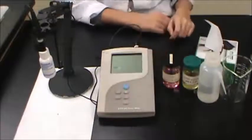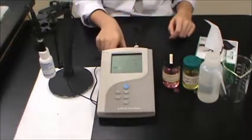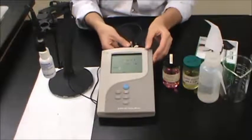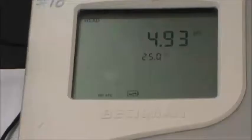Turn on the pH meter by pressing the on button at the bottom of the instrument. If the temperature probe is not connected to the instrument, plug it into the appropriate port at the back.